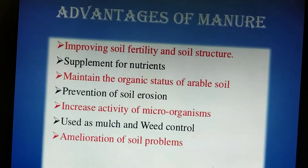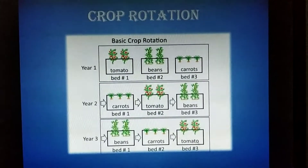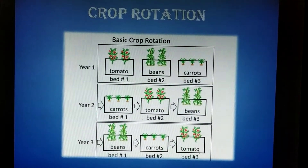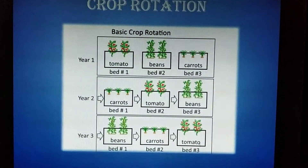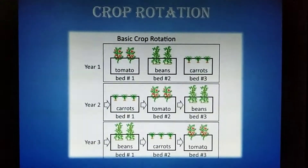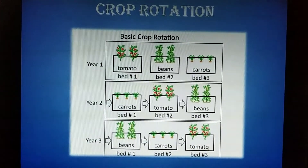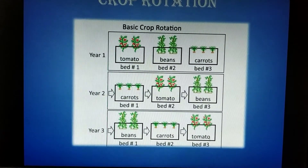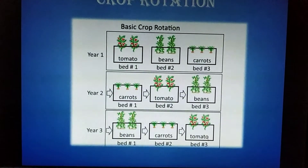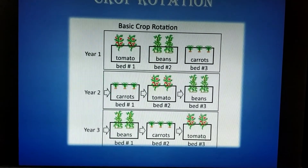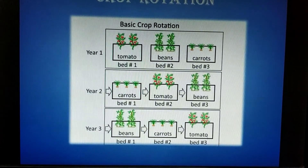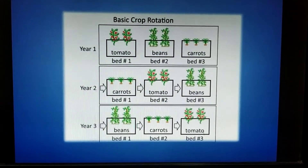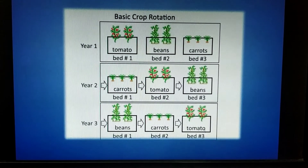Another method to increase soil fertility is crop rotation. Farmers replenish soil nutrients by growing crops in rotation, which is called crop rotation. For example, in year one a field may have tomatoes, beans, and carrots. In year two, those crops are shifted to different beds, and in year three they are rotated again — so carrots replace tomatoes, tomatoes replace beans, and so on. This seasonal changing of crops enriches the soil nutrients. That is all for today; the remaining topics will be covered in the next presentation.